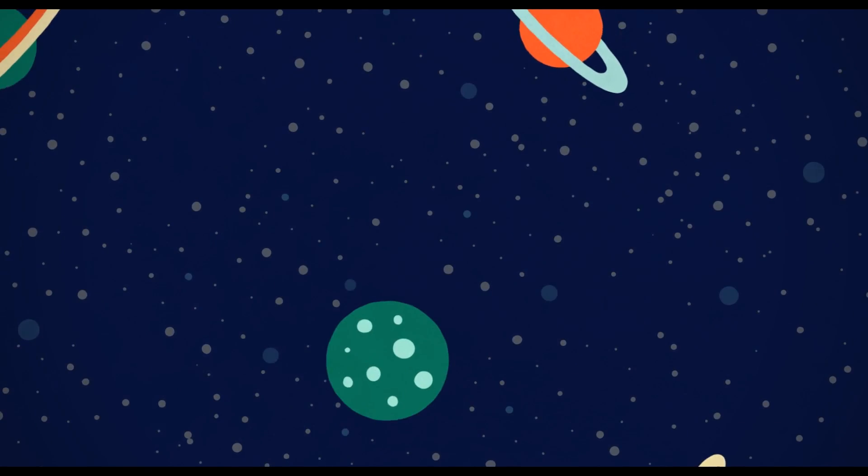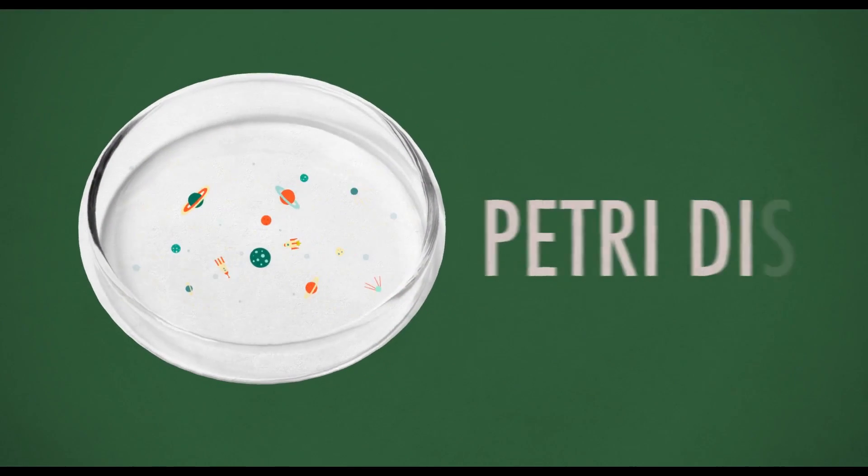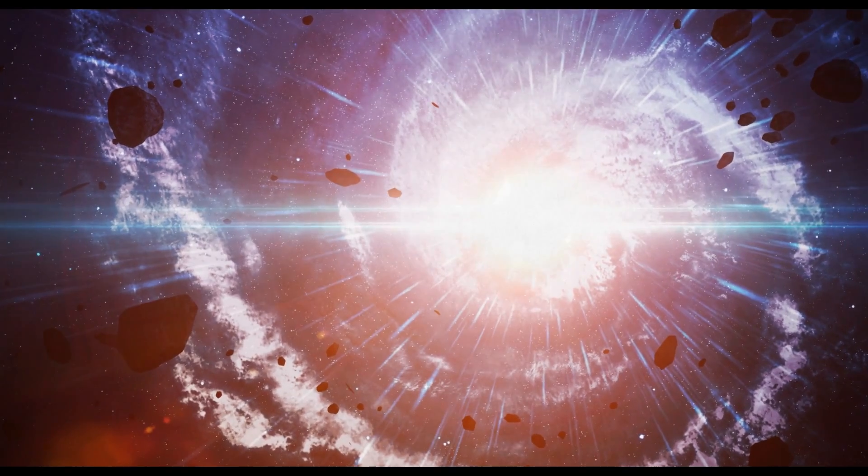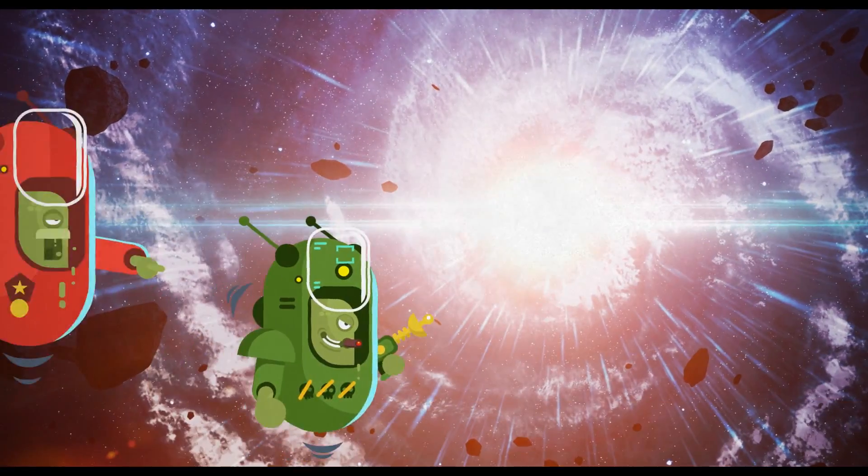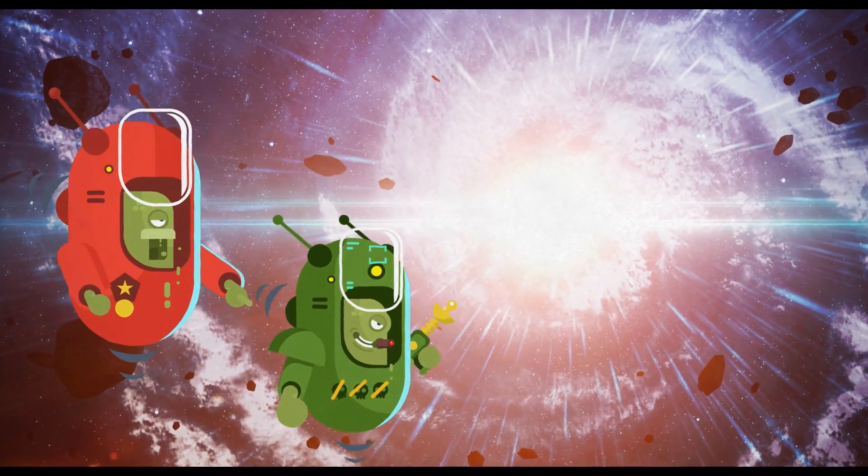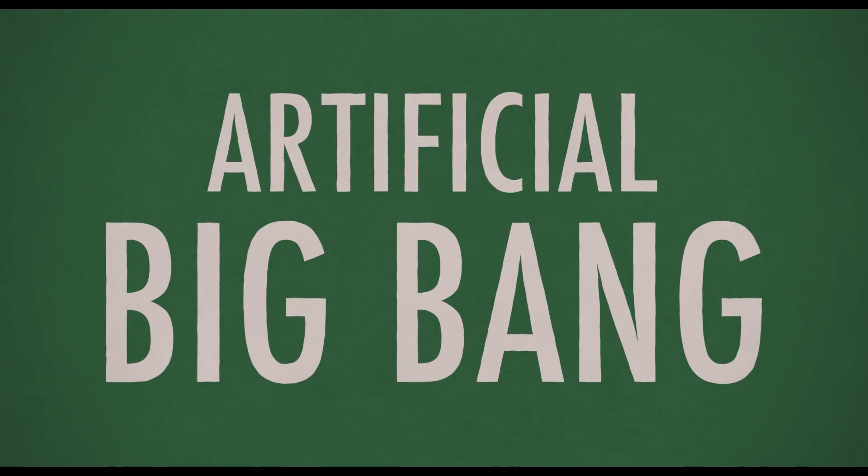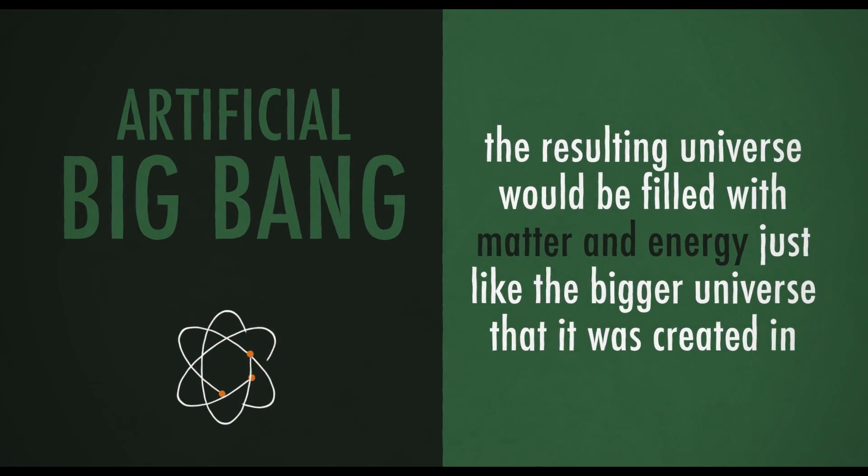The first is that we exist in a universe that has been created in a laboratory and that we're basically living in a petri dish. We ourselves are learning so much about the origins of the universe and the big bang that it's not too far a stretch to consider the possibility of recreating it under controlled conditions. If a superintelligence had decided to do so, there would be no way for us to see the reality outside. Creating an artificial big bang would mean the resulting universe would be filled with matter and energy, just like the bigger universe that it was created in.